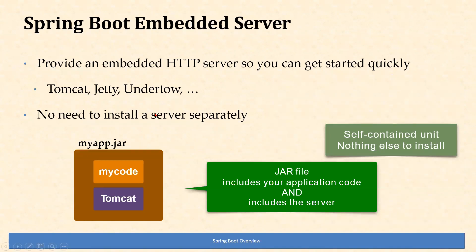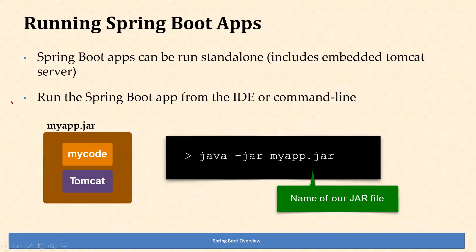As discussed, Spring Boot contains an embedded server — Tomcat, Jetty, or Undertow. By default we get Tomcat whenever we have the Spring Web dependency. No need to install any server separately. When the JAR is generated for the starter project, that JAR file is going to contain all the code you have written plus the server itself. If we want to run the JAR from the console, we can do java -jar with whatever JAR file we created — this JAR has the code and the Tomcat. We can also run it directly from the IDE.